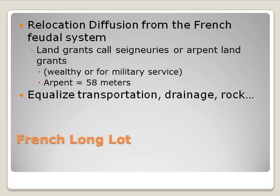The second type of land division is the French long lot. This was brought to the United States through cultural diffusion — it was part of the French feudal system. Land grants called seigneuries were given to wealthy people or in lieu of payment for military service. An arpent is a linear measurement of 58 meters, so these were grants of a specific size. The French long lot got its name because the land tends to have very linear, long, and narrow divisions.